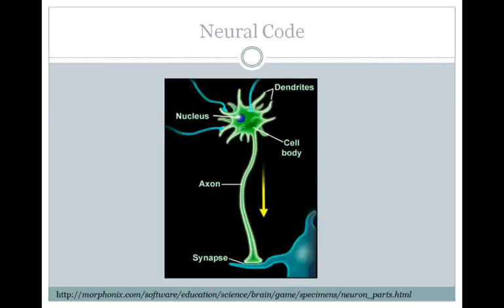In some ways, you can think of a neuron as speaking in a binary code like a computer. It's either firing an action potential or not firing an action potential. To determine whether the neuron should fire an action potential, it has to integrate the many thousands of synapses on its cell body and dendrites. If at the axon hillock the membrane potential is above threshold, you'll get an action potential which will be propagated down the axon and cause the release of neurotransmitter.